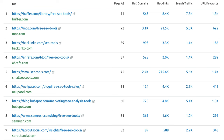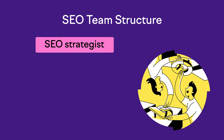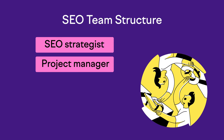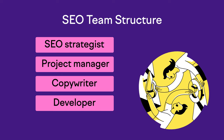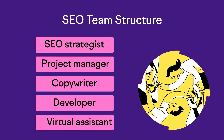Now that you know how to optimize for all of these SEO opportunities, who should be responsible for doing this work? A lean SEO team will have the following members: number one, an SEO strategist; number two, project manager; number three, copywriter; number four, developer; and number five, a virtual assistant or VA.